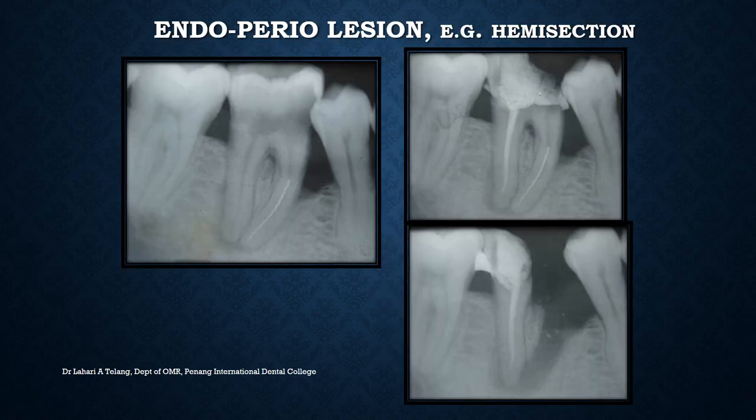Moving on to the endoperiole lesion — this case shows hemisectioning of a tooth after root canal treatment. There is significant angular bone loss around 7-8mm below the CEJ, a radiolucency involving the tooth, a broken instrument in one of the canals, and a radiolucency due to caries. This tooth has both endodontic and periodontal involvement — the resulting abscess is called an endoperiole lesion. Conversely, a perioendo lesion is one where primary periodontal involvement leads to retrograde infection, causing the tooth to become non-vital.